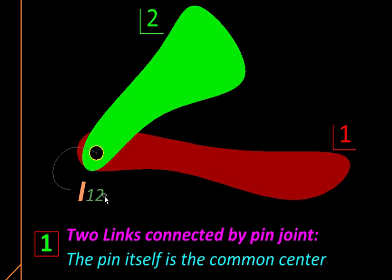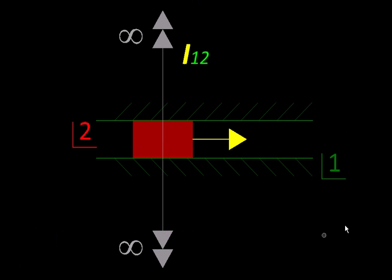And this is the notation we will use for relative centers: I_12. 'I' for instantaneous centers and '1,2' stand for the two bodies - link one and link two. For links one and two here, the guide and the slider,